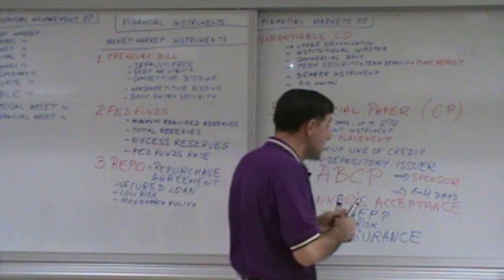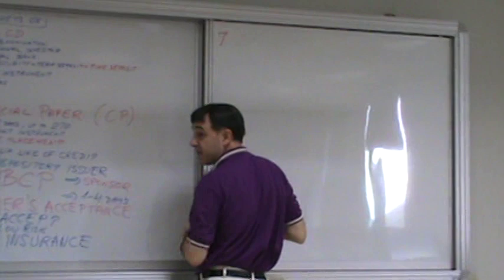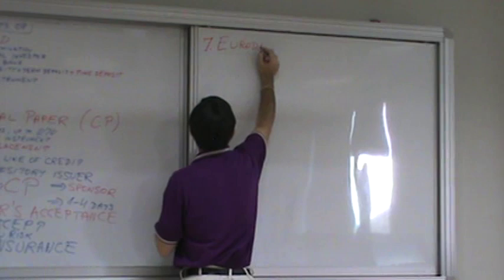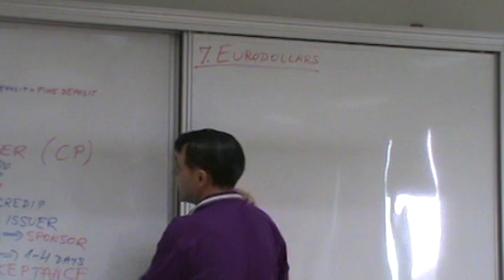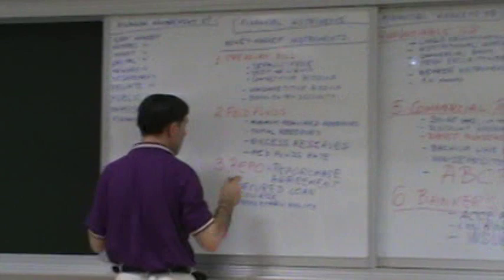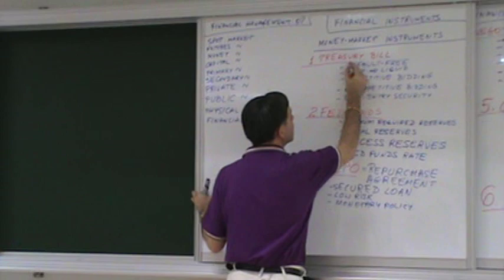We've got number seven: Eurodollars. So the full list is: Eurodollars number seven, Banker's acceptance number six, Commercial paper number five, Negotiable CD number four, Repo, Fed Funds, and Treasury Bill.